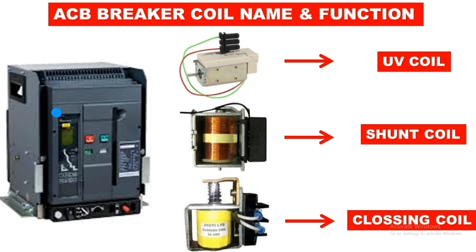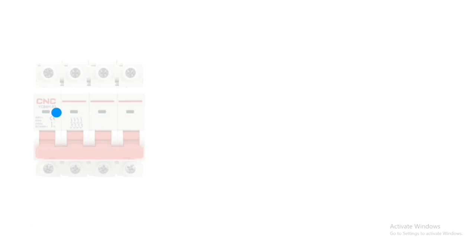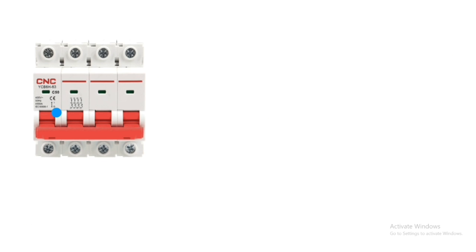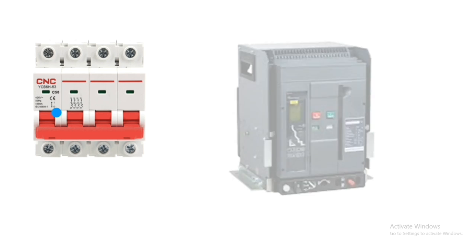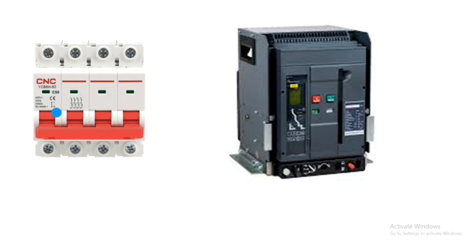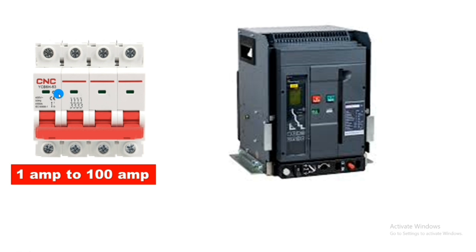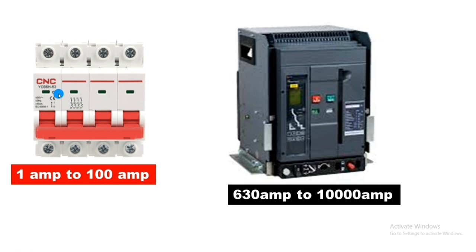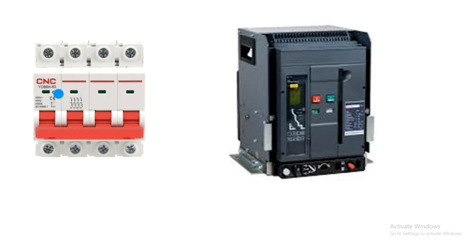First, let's see why air circuit breakers are used. As we know, MCBs are used in our houses for protection, while air circuit breakers are used in industry. MCB ratings range from 1 ampere to 100 ampere, whereas air circuit breaker ratings range from 630 ampere to 10,000 ampere.